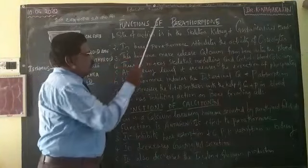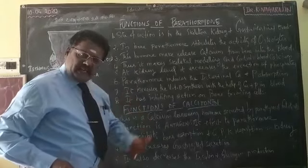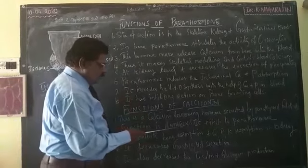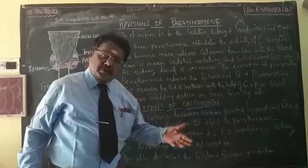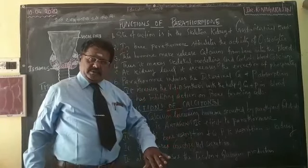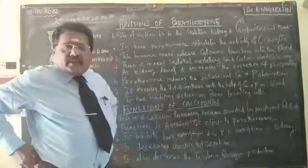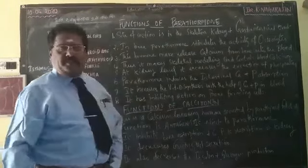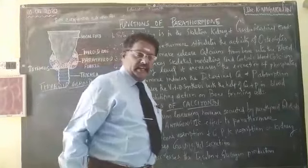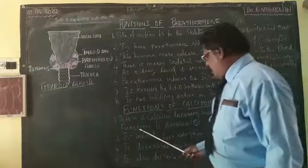Now we look at the functions of calcitonin. Calcitonin is another hormone that has antagonistic action against parathormone. Whatever action is stimulated by parathormone will be reduced or prevented by calcitonin — they are antagonistic to each other. Calcitonin is a calcium-lowering hormone; whenever there is excess calcium in the blood, it will be decreased by calcitonin.